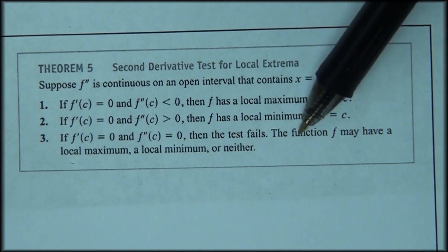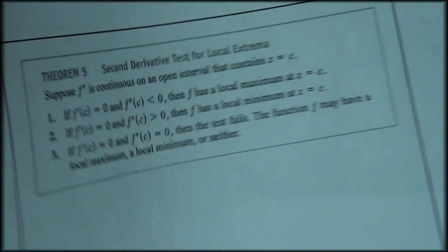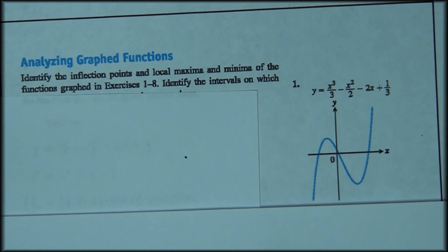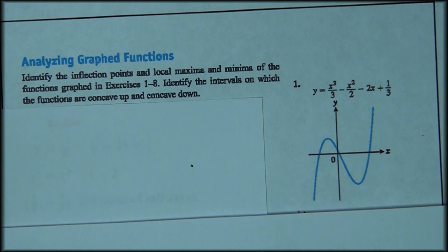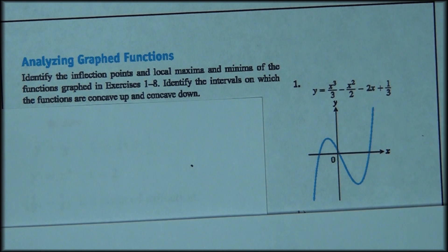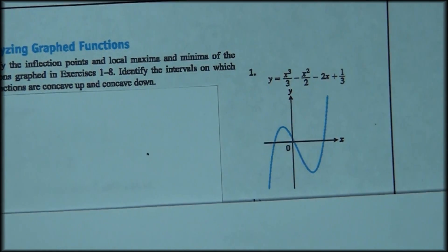Now we'll take a look at an example where we'll identify the inflection points, the local maximum and minimum, and the intervals on which the function is concave up and concave down. The function is y equals x cubed over 3 minus x squared over 2 minus 2x plus one-third.